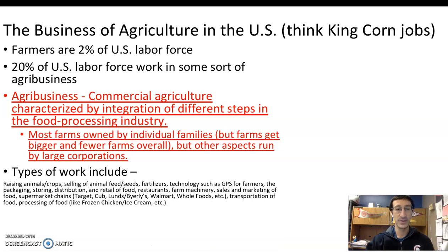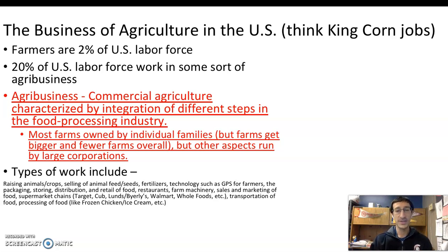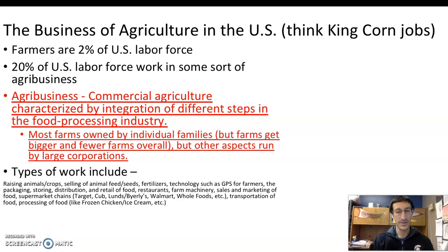Types of work in agribusiness include raising animals and crops — farming — as well as selling animal feed or seeds. In many cases, farmers don't actually produce their own animal feed or seeds — they buy them. People who sell fertilizers are also part of agribusiness. Technology plays a role too: farmers use precise scientific tools to accurately measure their land and determine where to plow. The King Corn documentary would have shown many of these factors. Drones also now play a very large role.